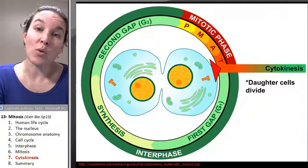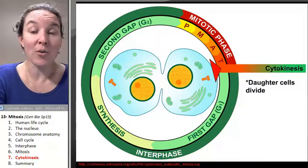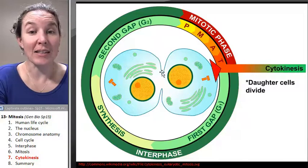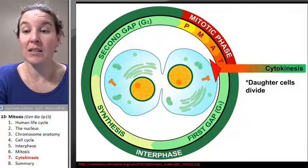We've got two nuclei inside one cell — that's not going to be cool. So we have to go through cytokinesis, and that's the literal division of the cell itself.